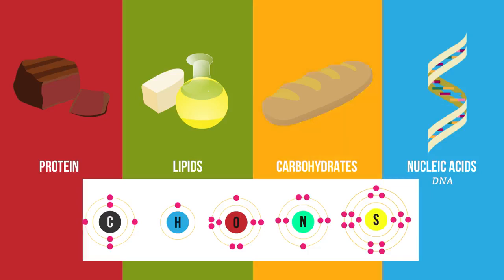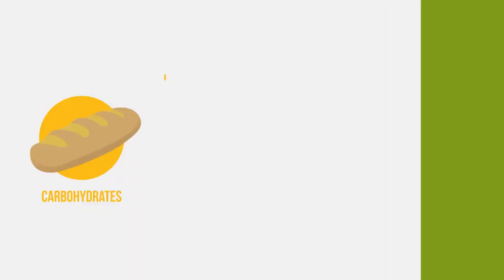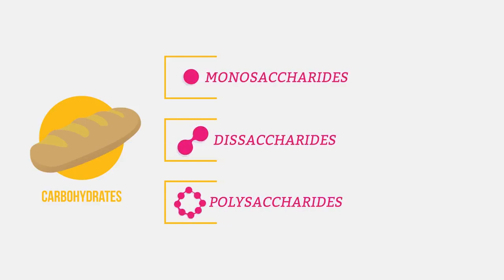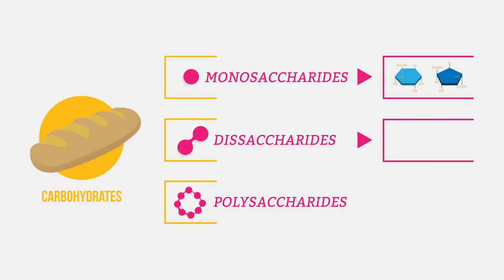Let's start by looking at carbohydrates. There are three main types of carbohydrate: monosaccharides, disaccharides and polysaccharides. Simple sugars like glucose and fructose are monosaccharides. Sucrose, which is made up of two simple sugars joined together, is a disaccharide.